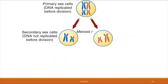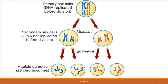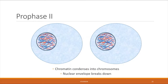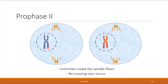After meiosis one, the cell does not stop — it moves into meiosis two, where each of the two cells engages in a second set of meiosis phases. Prophase two, the first stage in meiosis two, involves the chromatin recondensing back into chromosomes, the nuclear envelope breaking down, and the centrioles once again creating the spindle fibers.